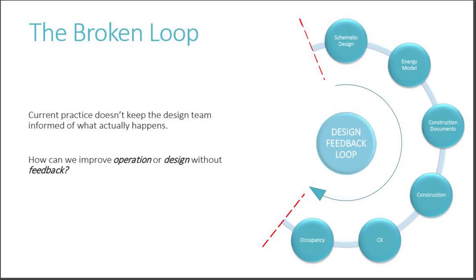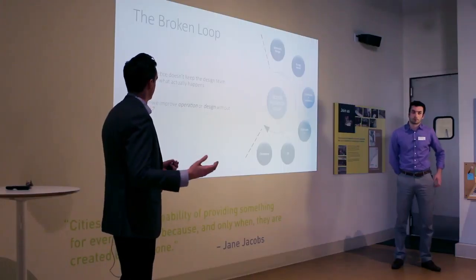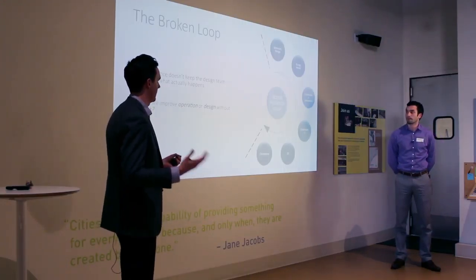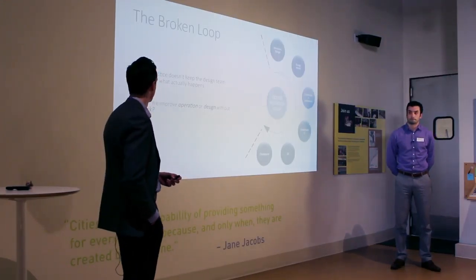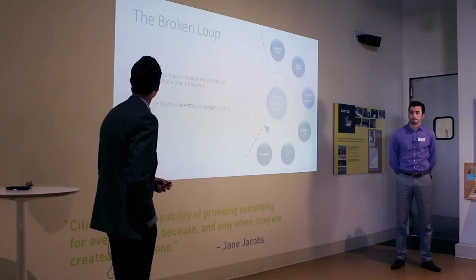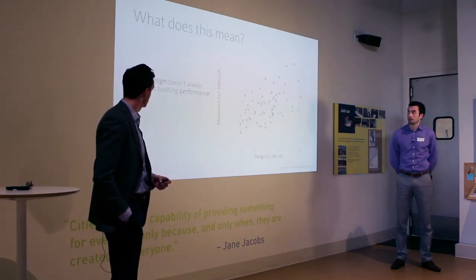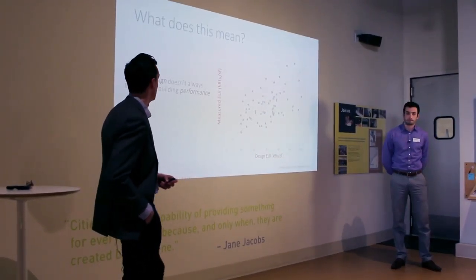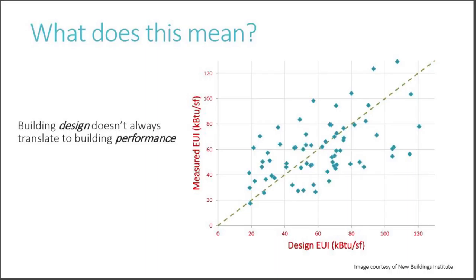Our current design practice goes from schematic or concept design through construction and occupancy, and the design team rarely actually gets to see what happens during occupancy. There's a broken loop because we don't have feedback on what goes on inside the building. This means that we're really not very good at predicting how our buildings are going to perform in occupancy.